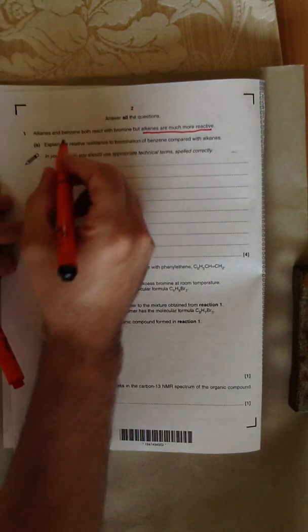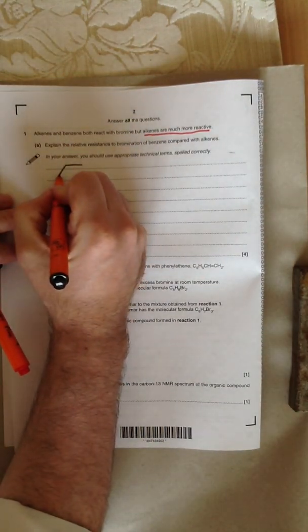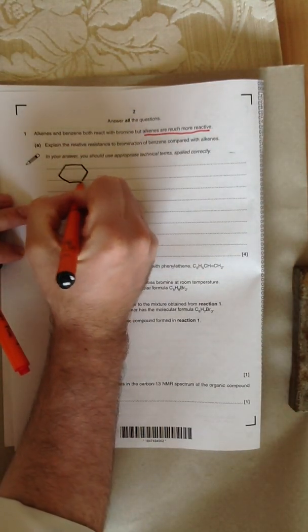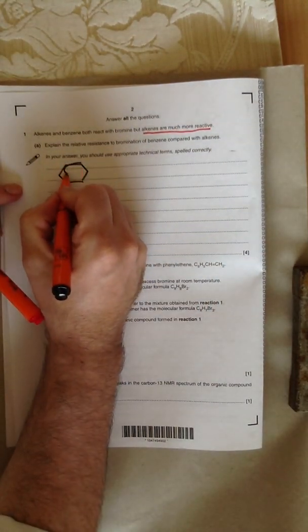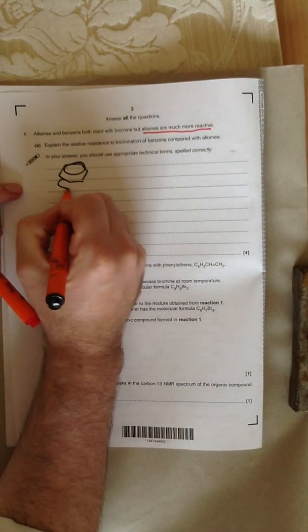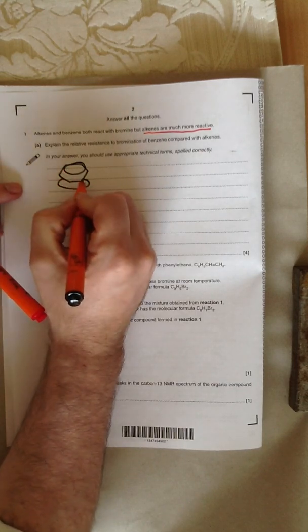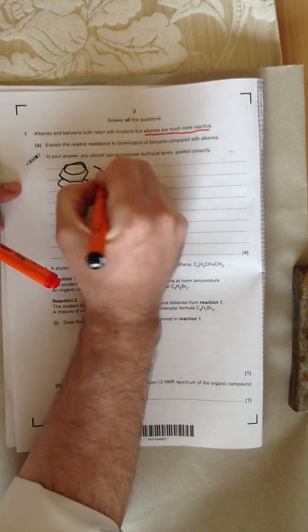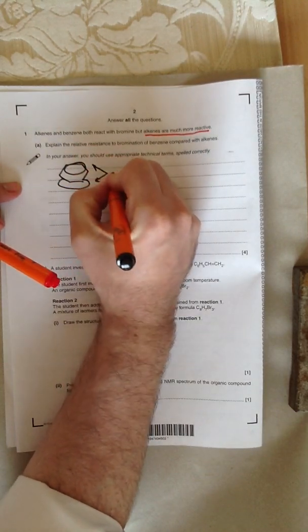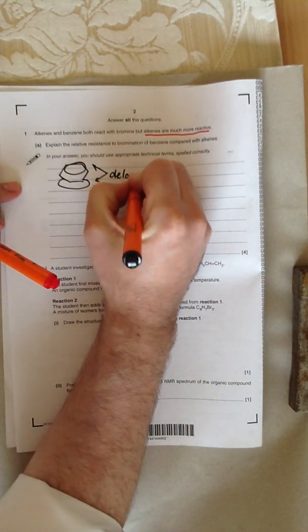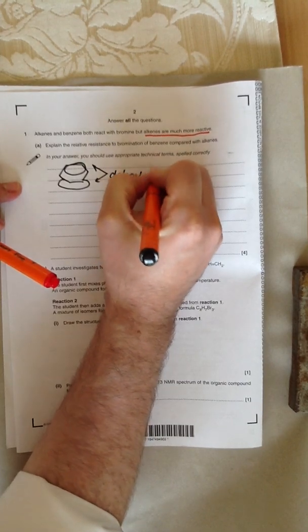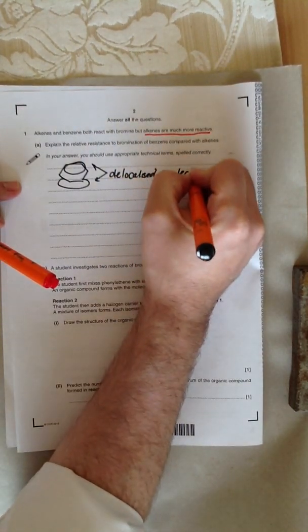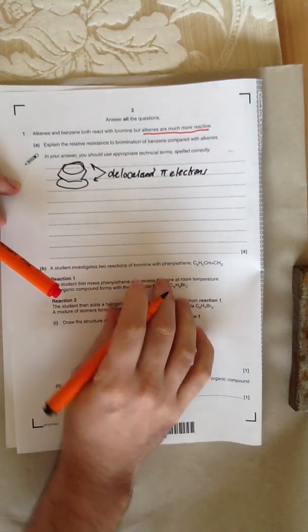When we talk about benzene, the first thing we need to talk about is the delocalized pi-cloud, the delocalized electrons above and beyond the ring. I'm going to draw it with a diagram. The six carbon atoms form a hexagonal ring and above and below are the delocalized pi-electrons.